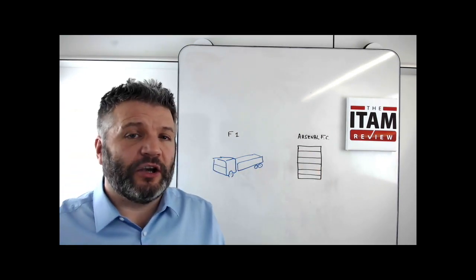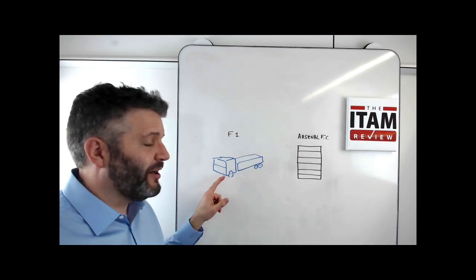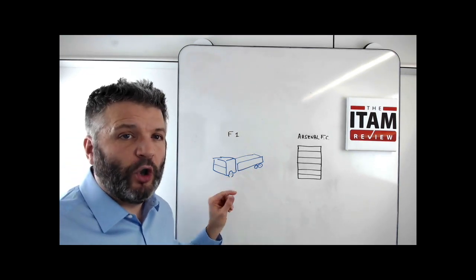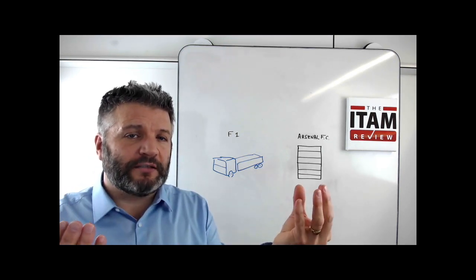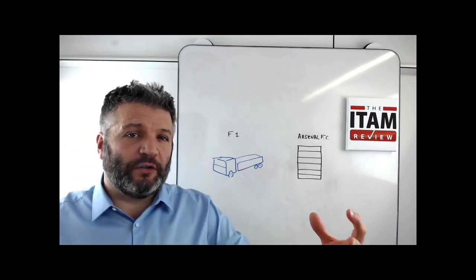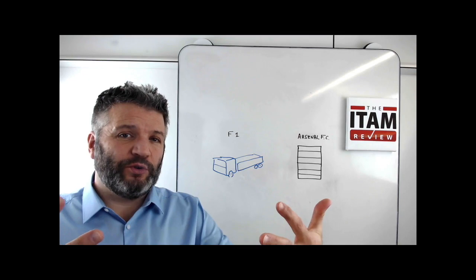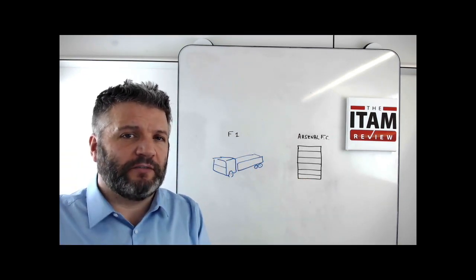In CMDB terms, this wheel having a blowout would be called a configuration item or a CI. It's a configuration item that underpins the service being delivered by the business. What CMDB does is it collects all of these configuration items, it tells you how they're related and how they're going to impact the service being delivered to the business.